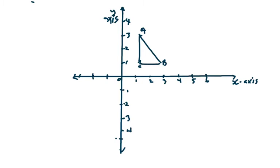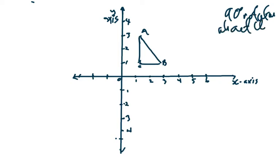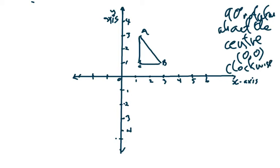I have drawn triangle ABC. Triangle ABC undergoes a 90-degree rotation about the center — the origin at (0, 0) — clockwise. Clockwise means it is going to go in that direction.